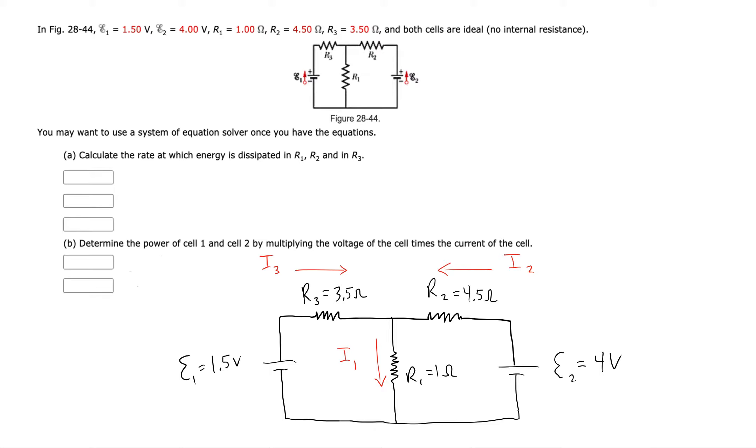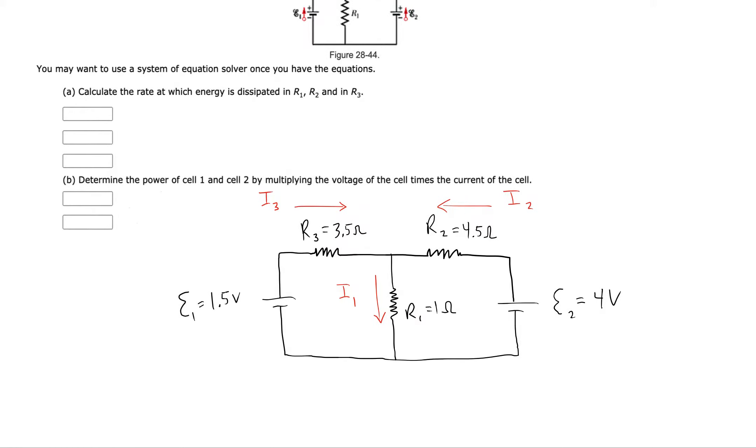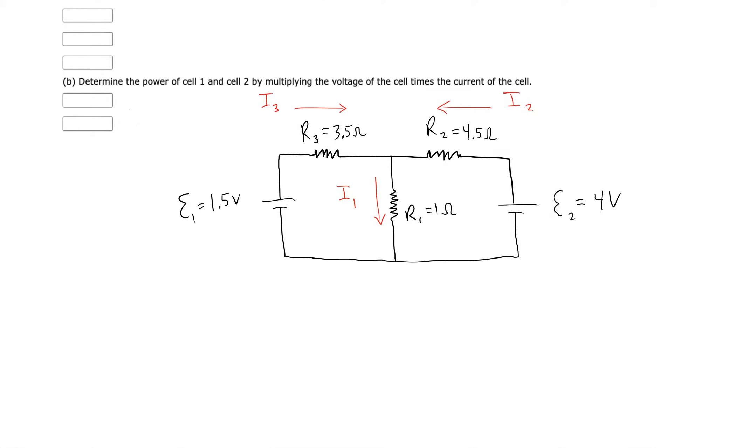Alright, now that I have those guesses made, now I'll write my loop law equations. Okay, so I typically do one loop and then another loop and then I'll do a junction law equation.